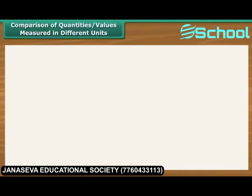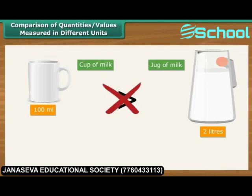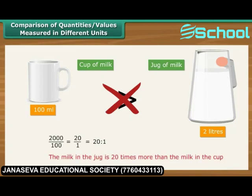Comparison of quantities and values measured in different units. Vinita has 100 milliliters of milk in a cup and 2 liters of milk in a jug. 100 is greater than 2, but can we say that the quantity of milk in the cup is greater than the quantity of milk in the jug? No. The two quantities are measured in two different units and hence cannot be compared. We should express them both in the same units. Express 2 liters as 2000 milliliters. Now the quantities are comparable. 2000 by 100 is the same as 20 is to 1. Therefore, the milk in the jug is 20 times more than the milk in the cup.